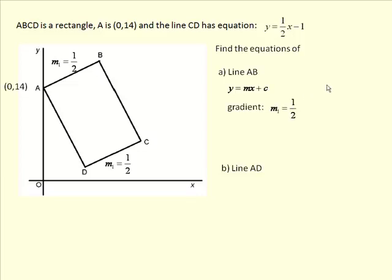What about the intercept now? Well, we can see that it crosses the y-axis at the point (0,14), so the intercept is 14. So we can write down the equation of line AB. It's y equals a half x plus 14, where a half is the gradient and 14 is the y-intercept.